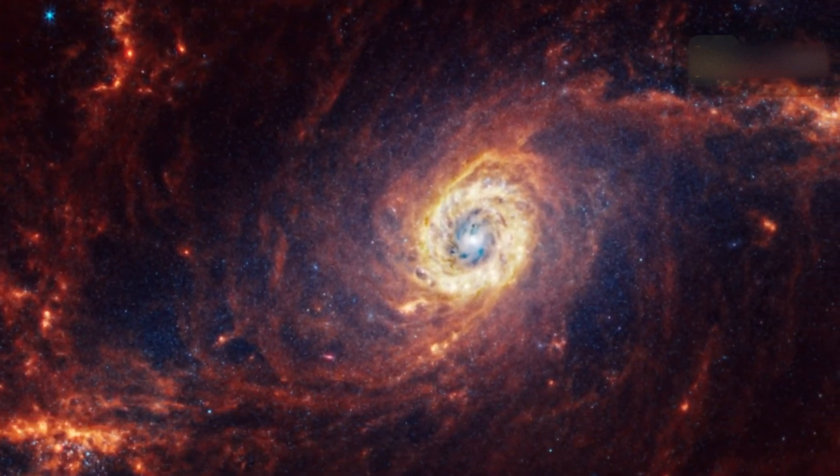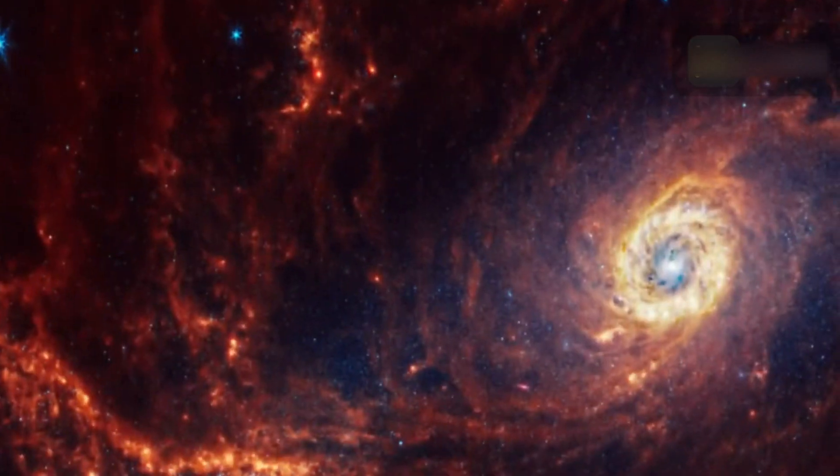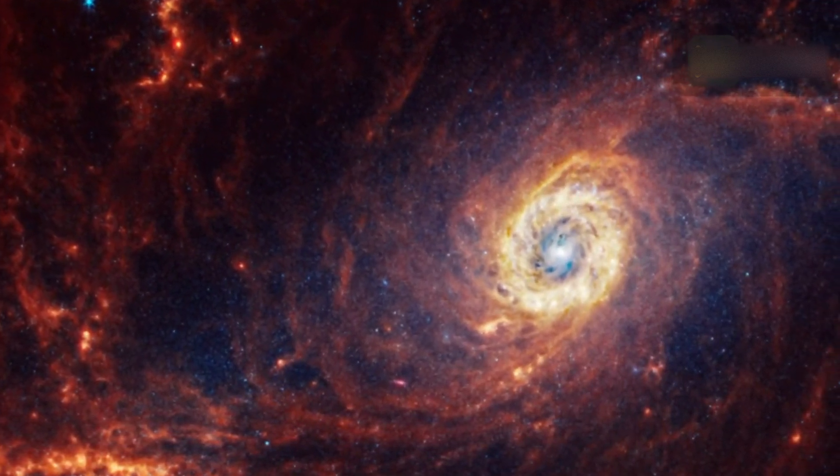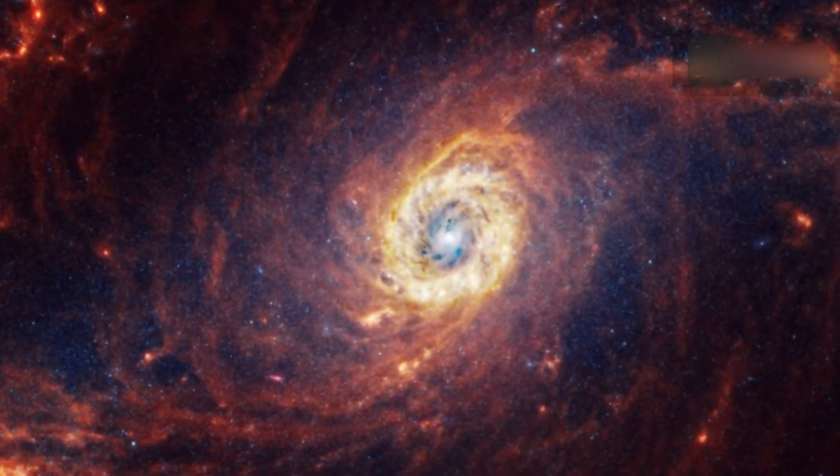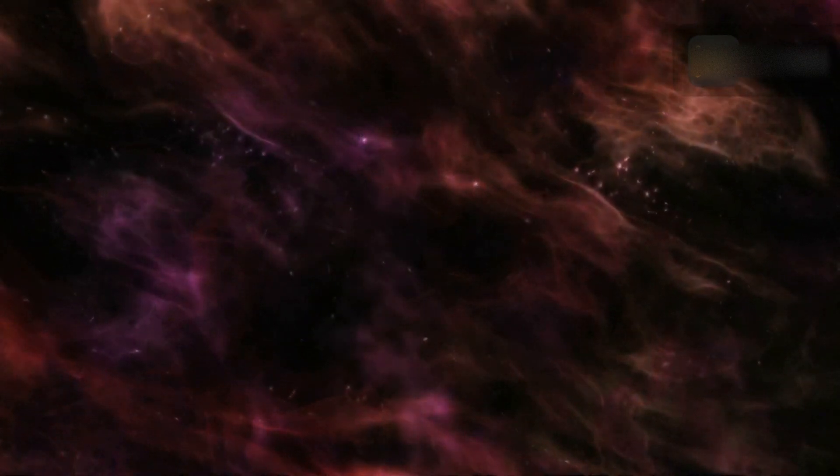Spiral galaxy NGC 1672 is 60 million light-years away in the constellation Dorado. The same instrument also captured stars that are still in the process of forming, encased in envelopes of gas and dust from which they are gathering mass. Those envelopes can be seen as red seeds on the peaks of dust lanes.